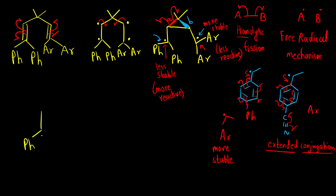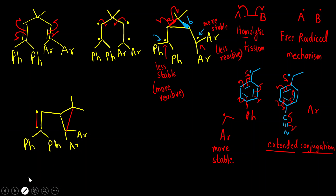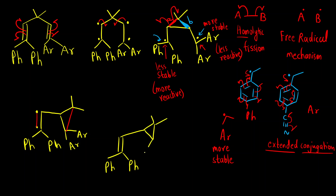After bond A breaks, we get: Ph, Ph on one side with one electron forming a pi bond, and the cyclopropane ring bond remains intact. On the other side, we have Ar, Ar with a radical. In the final step, the pi bond forms and the three-membered ring closes. The final product has a double bond with Ph, Ph groups, a three-membered ring with two methyl groups, and Ar, Ar attached.